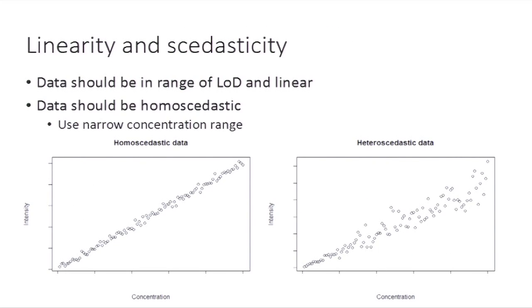So let's look at them. First, the data should be in the range of limit of detection and the data should be linear. Otherwise, the limit of detection value will be somewhat wrongly estimated. Also, the data should be homoscedastic.